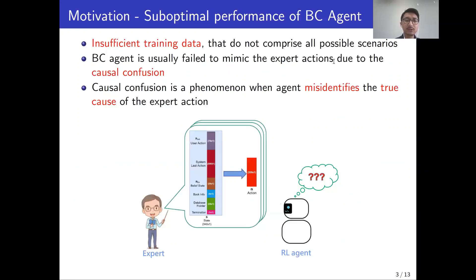There are two problems that affect the performance of the BC agent. First is insufficient training data, and the second is the causal confusion phenomenon, where the agent will misidentify the true cause of the expert action.